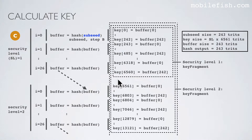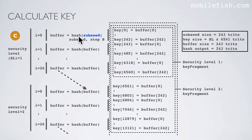In this slide I will explain how the key is calculated. Security level 1 is divided into 27 steps from 0 to 26. Security level 2 is also divided into 27 steps. You start with the sub-seed from step B, hash the sub-seed, and assign it to the buffer array. This buffer size is always 243 trits. The key size depends on the security level.